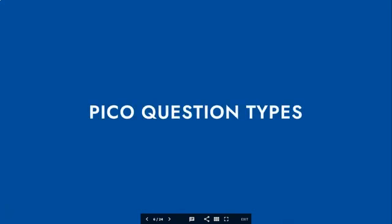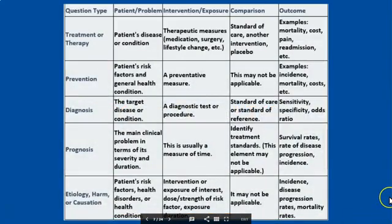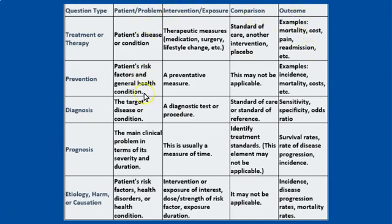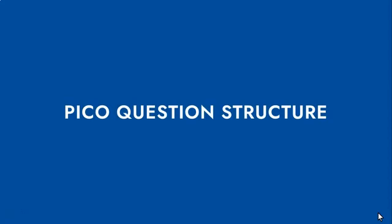There are many PICO question types and these are summarized for you in this chart. If you look at the column on the left you'll notice the question types, and along the top edge you'll notice your P, I, C, and O. This is to get you thinking about the structure of your question, and once you figure out what kind of question you have, you can go to the question structure.